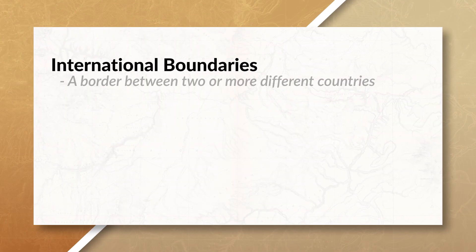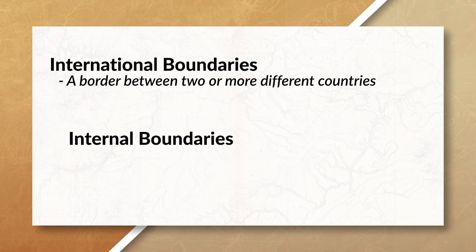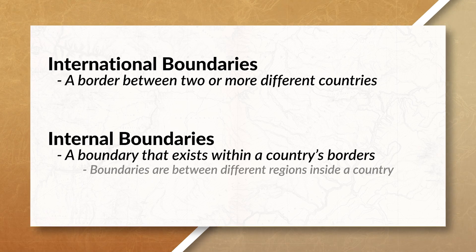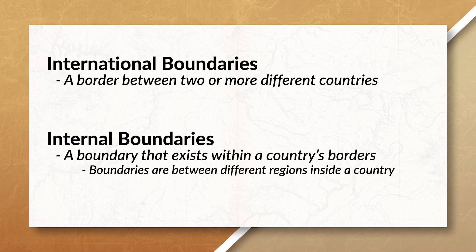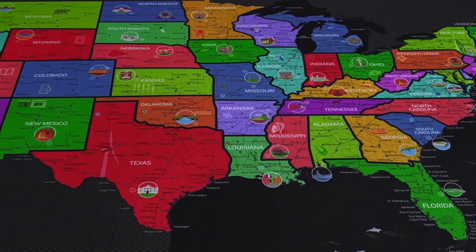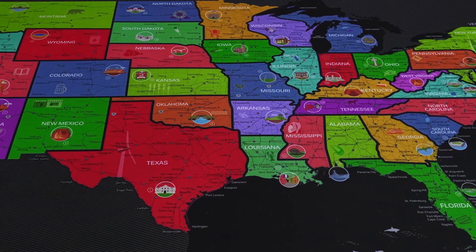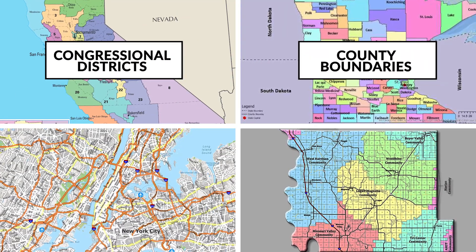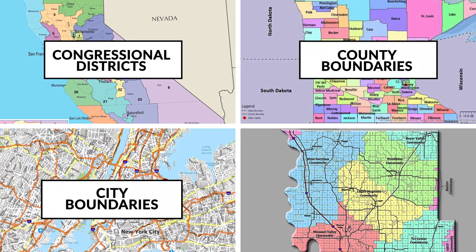Remember, international boundaries are between different states, and internal boundaries are boundaries that exist between different subdivisions within a state. An example of an internal boundary would be the boundaries of the 50 states of the United States. It could also include the United States congressional districts, county boundaries, city boundaries, and even school districts. All of these are different types of internal boundaries that serve different functions.